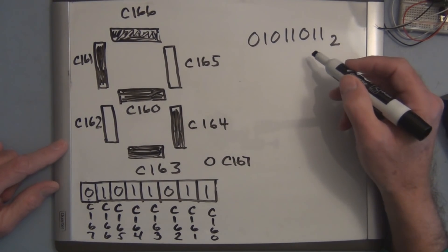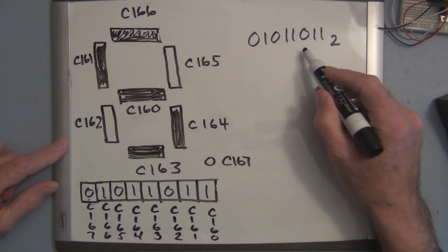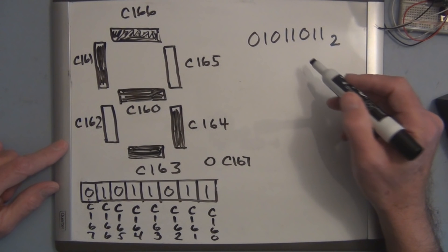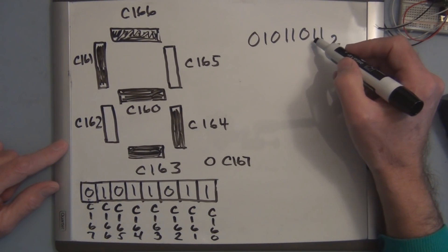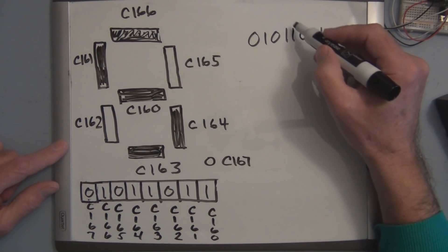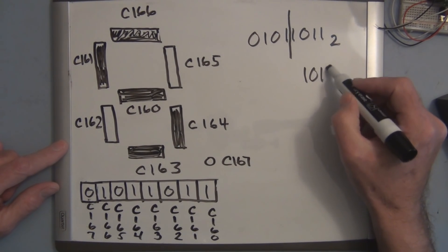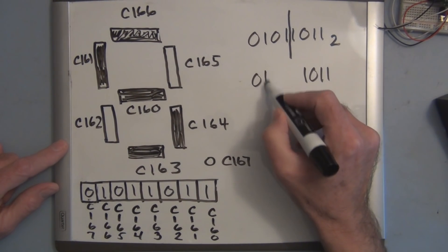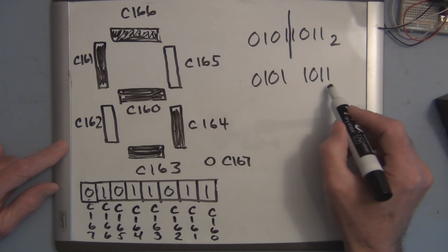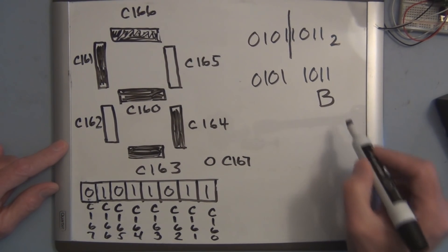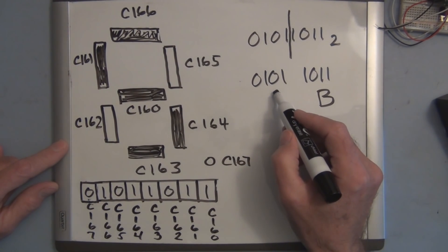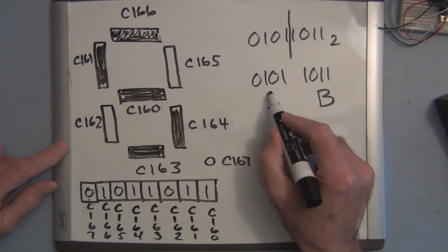And if you recall, if we want to turn this into a hexadecimal number, we just need to break this up into individual 4-bit binary numbers. So right there we have 1, 0, 1, 1 and 0, 1, 0, 1. And this here is 11, which is equivalent to B in hexadecimal, and this is 5 in hexadecimal.